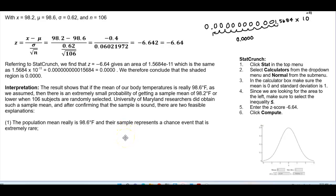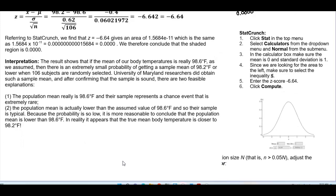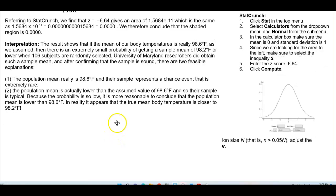Number one, the population mean really is 98.6 degrees Fahrenheit, and their sample represents a chance event that is extremely rare. Number two, the population mean is actually lower than the assumed value of 98.6 degrees Fahrenheit, and so their sample is typical. Because the probability is so low, it is more reasonable to conclude that the population mean is lower than 98.6 degrees Fahrenheit. So, in reality, it appears that the true mean body temperature is closer to 98.2 degrees Fahrenheit.